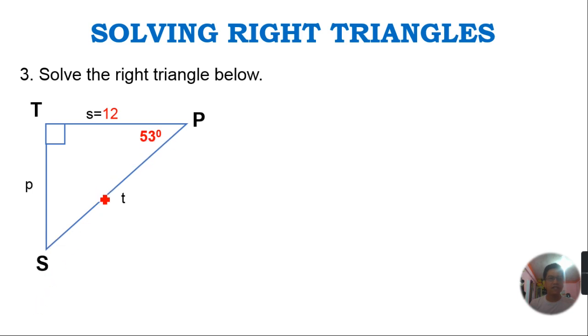There is no problem in getting the measurement of angle S. All we need to do is subtract from 180 the sum of the two angles. So measure of angle S equals 180 degrees minus 90 degrees plus 53 degrees. Just input that in your calculator, so we will get 37 degrees.